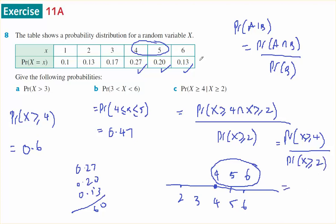So bigger than or equal to 4 are those, which is 0.6. And bigger than or equal to 2 is all of this, which is everything except that, so 0.9.